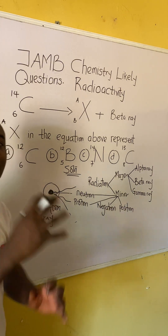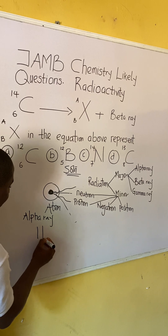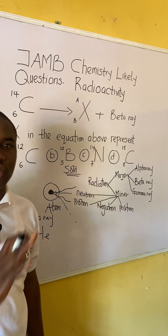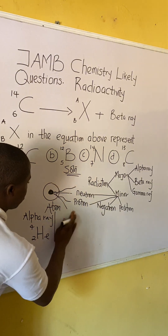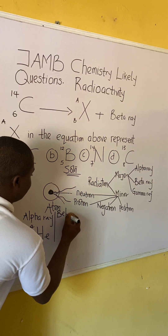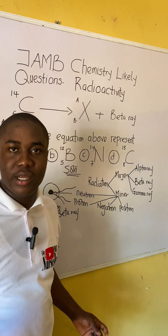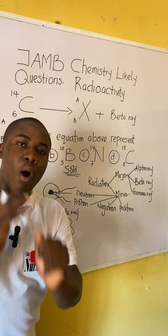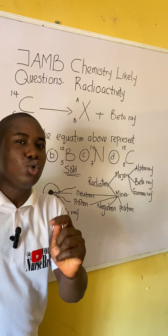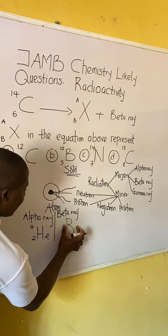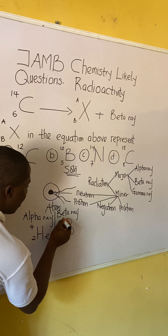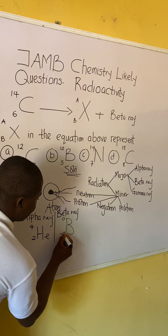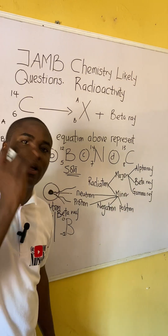For the alpha ray, the symbol is the helium atom — written as He with 4 on top and 2 on the bottom. The next one is beta ray. The symbol for beta ray is written as e with 0 on top and minus 1 on the bottom. Note this carefully — the 0 is above and minus 1 is below. This is the symbol for the beta ray.